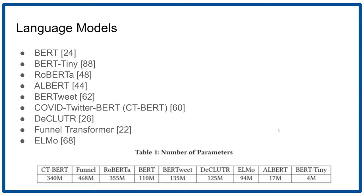These models can be roughly split into three size categories. On the large end, relative to the other models, we have CT-BERT, FunnelTransformer, and RoBERTa, which range from 340 million parameters to 468 million.